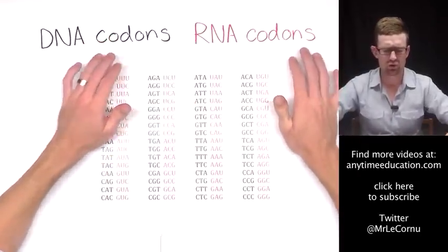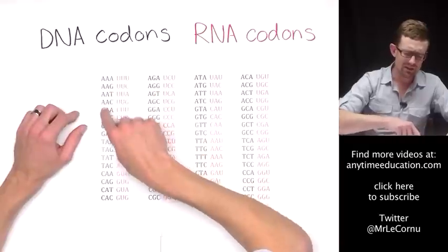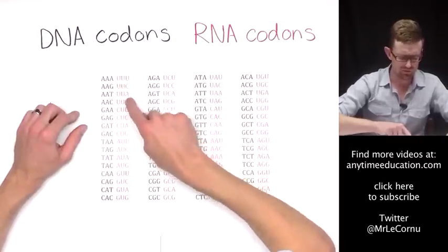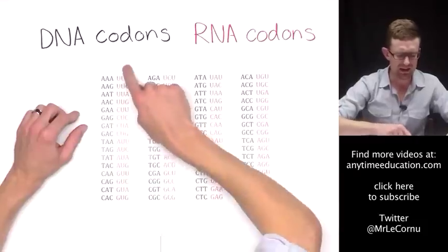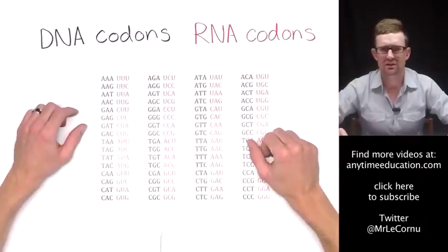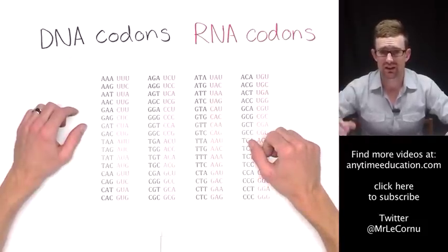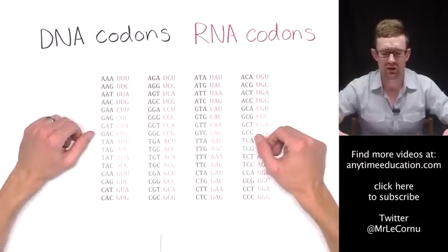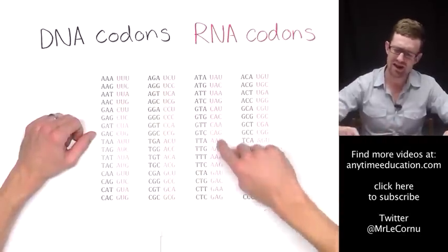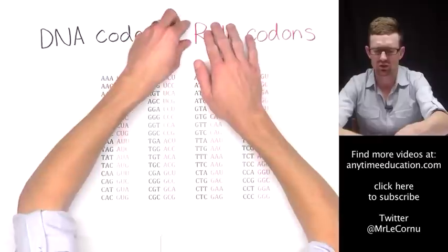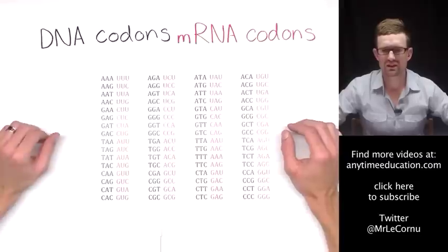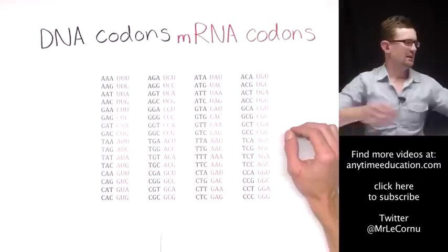They are involved in reading the message from the DNA in the nucleus, and then we convert it into an RNA message, and then that message travels elsewhere to be translated into our amino acids and into our proteins. Now because the RNA codons act as messages, we actually call it mRNA, which stands for messenger RNA.